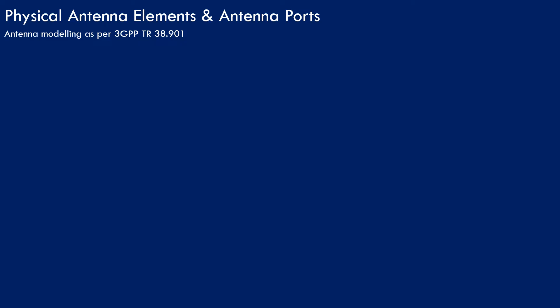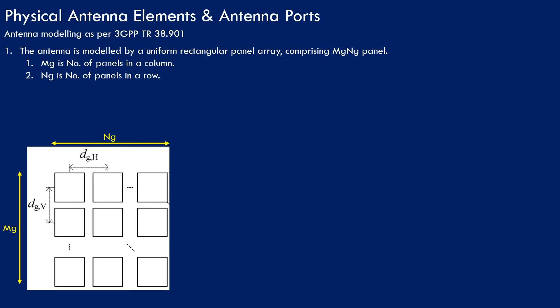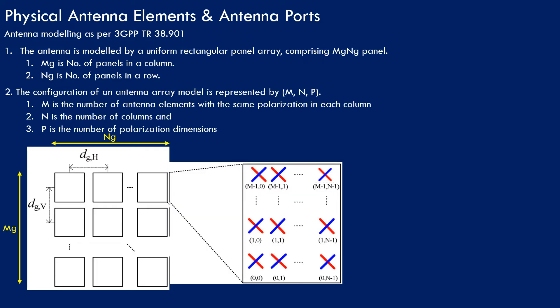Let us discuss how physical antenna elements and antenna ports are mapped with each other. In 5G antenna modeling, the antenna is modeled by a uniform rectangular panel array comprising Mg × Ng panels, where Mg is the number of panels in a column and Ng is the number of panels in a row. Each panel array has multiple antenna arrays, whose configuration is represented by M, N, and P — where M is the number of antenna elements with the same polarization in each column, N is the number of columns, and P is the number of polarization dimensions.